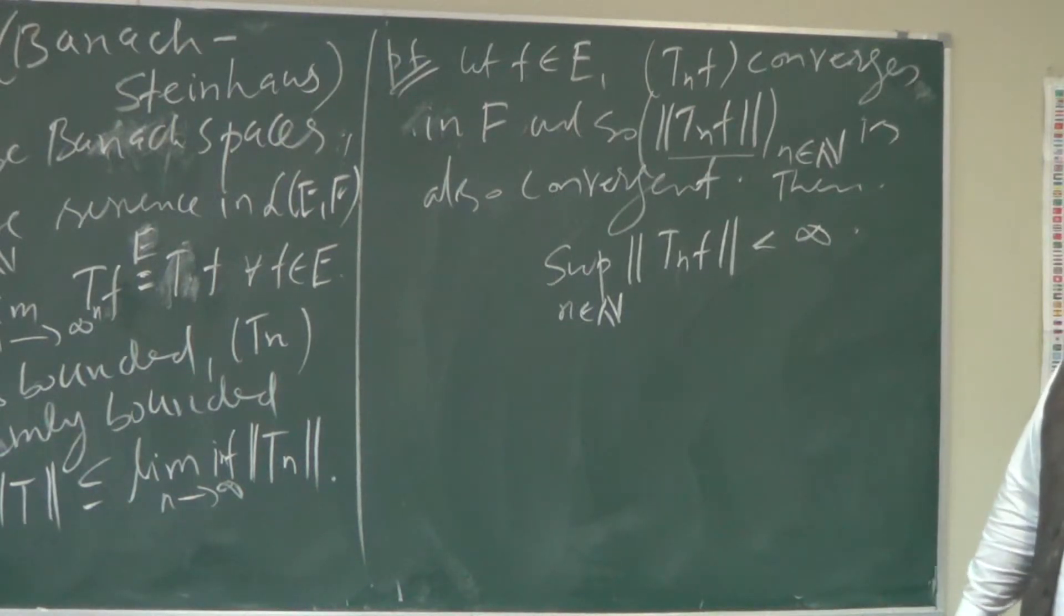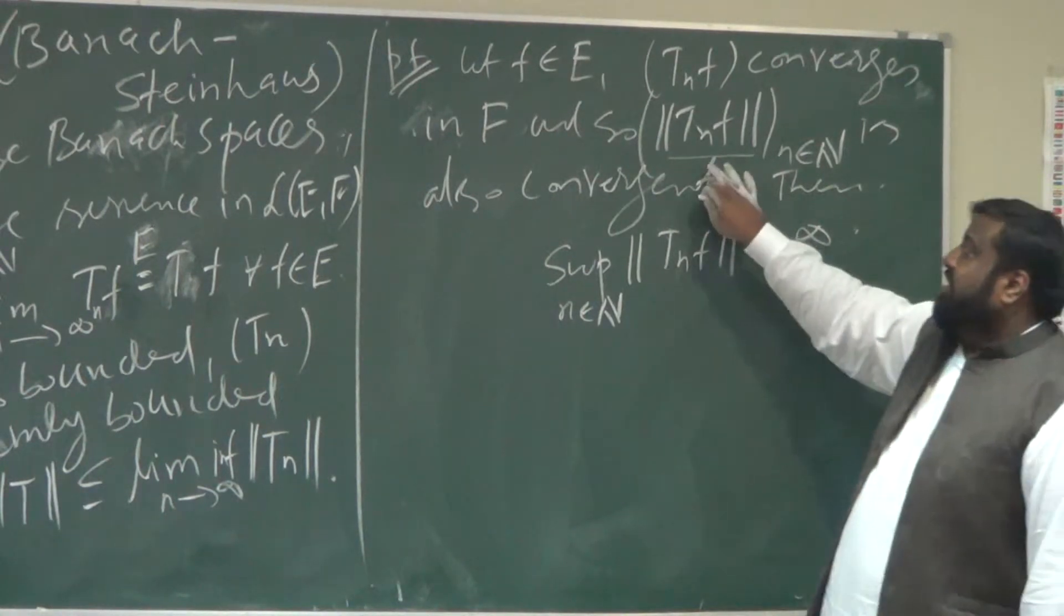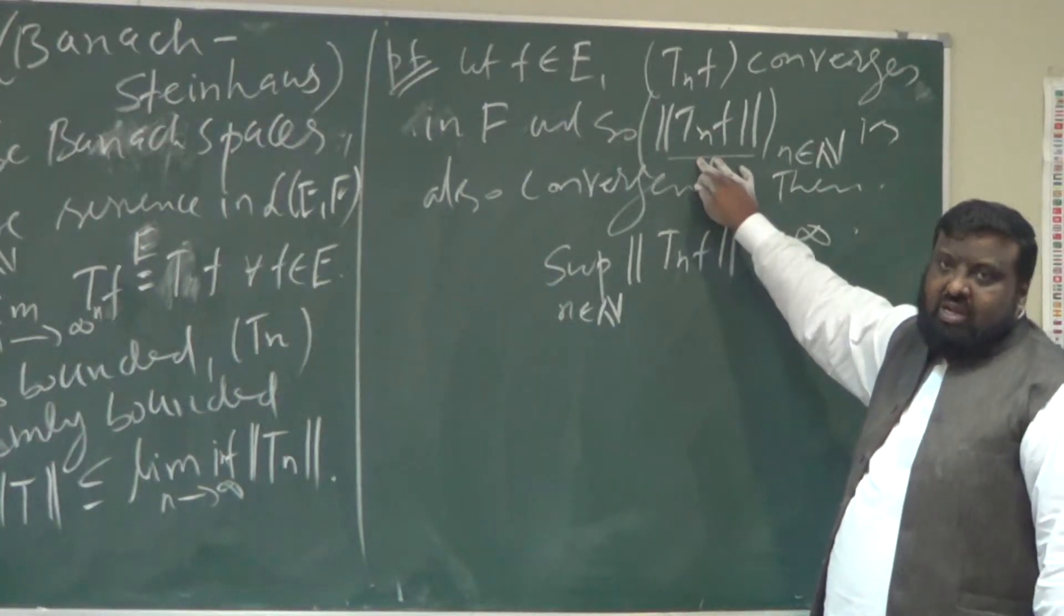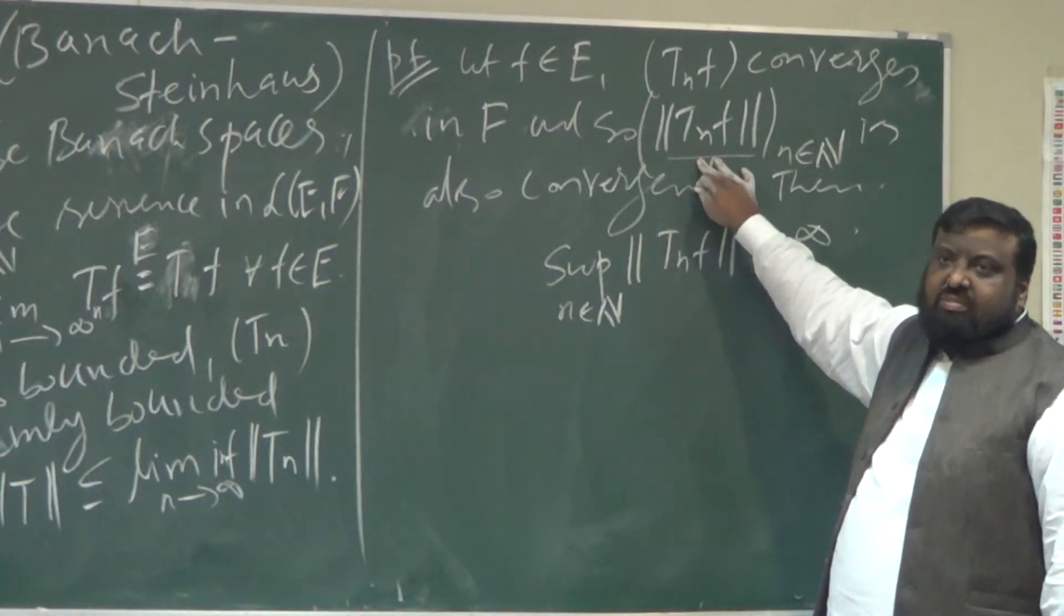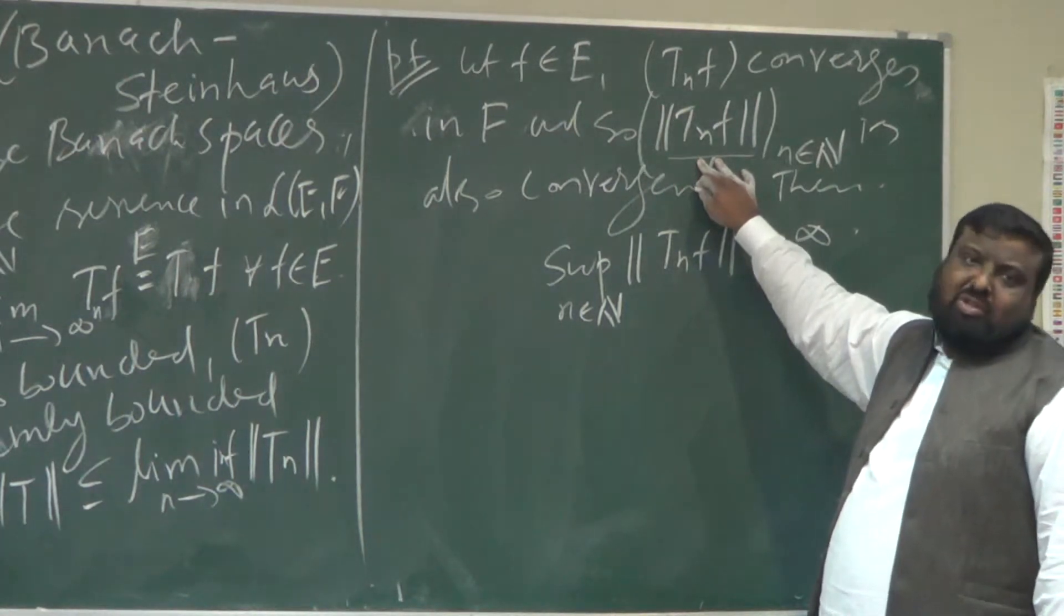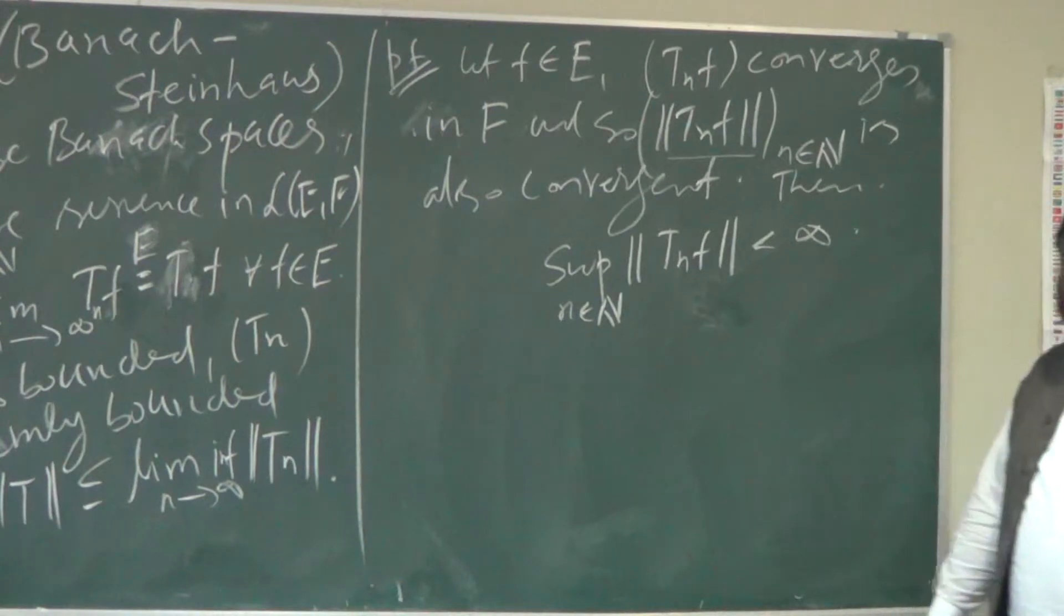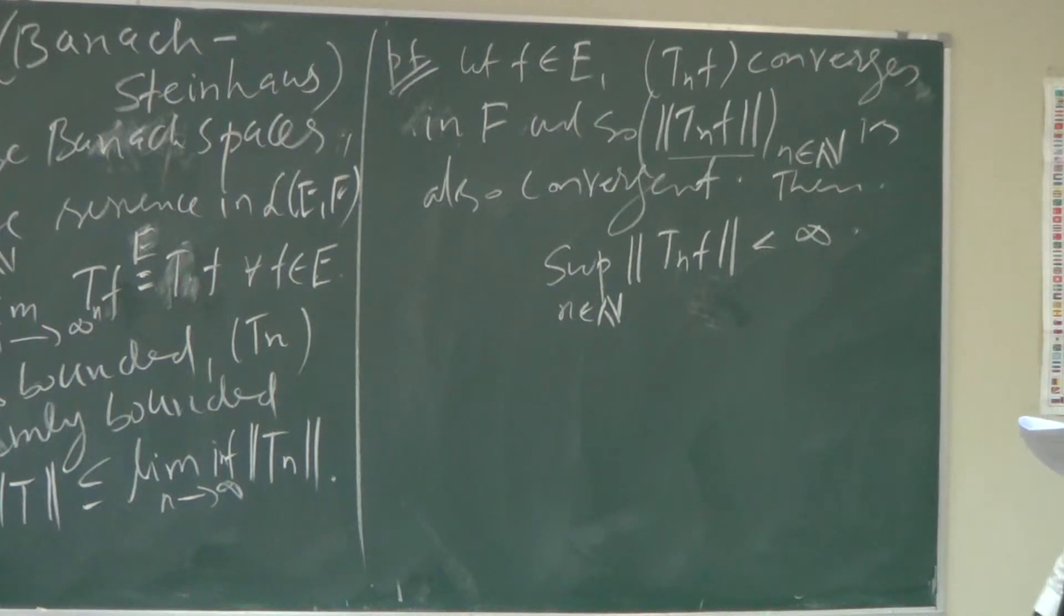So if it is bounded by some number, the supremum is also bounded by that number. And if this is true, we are in the assumptions of Uniform Boundedness Principle.